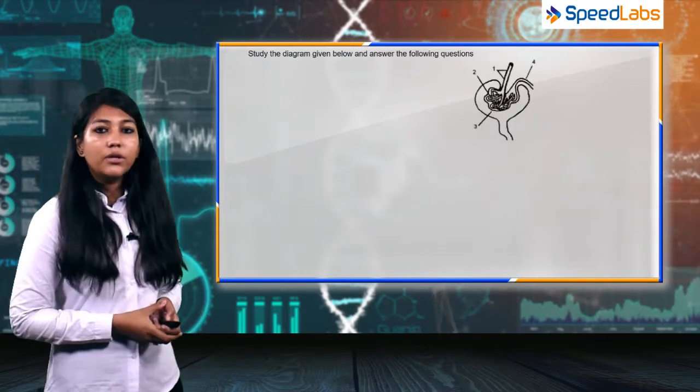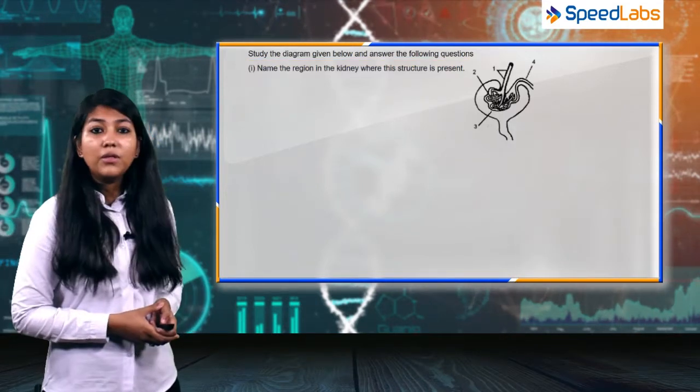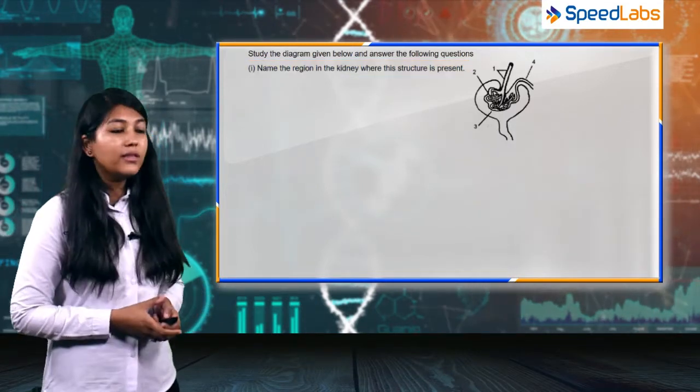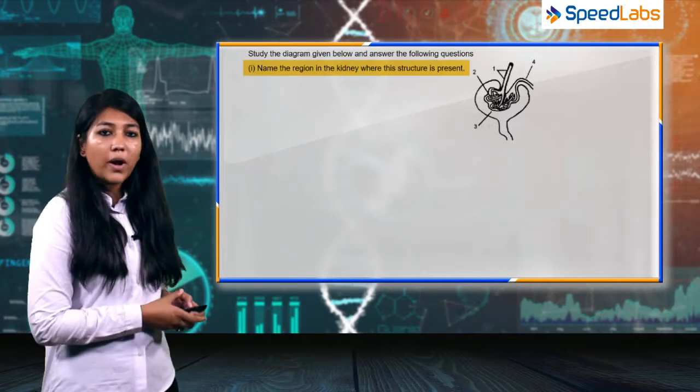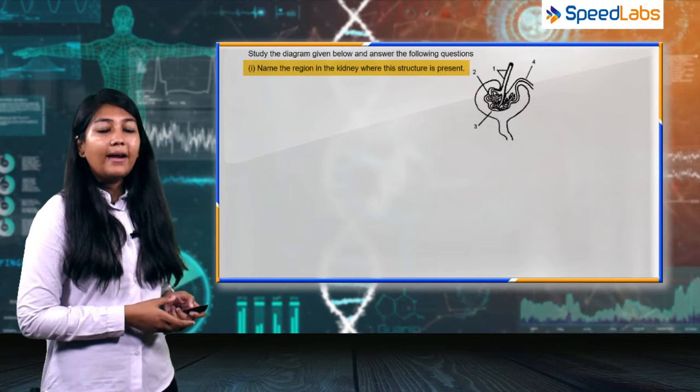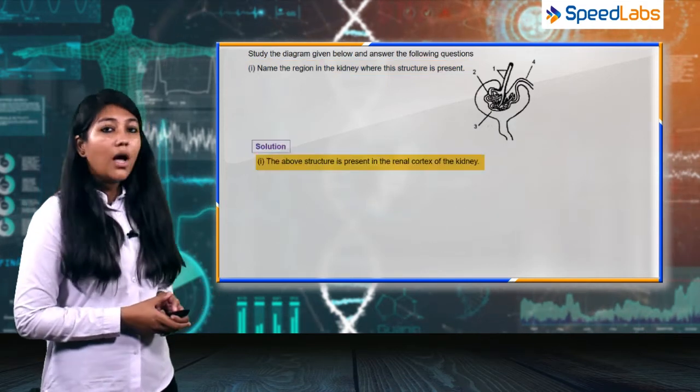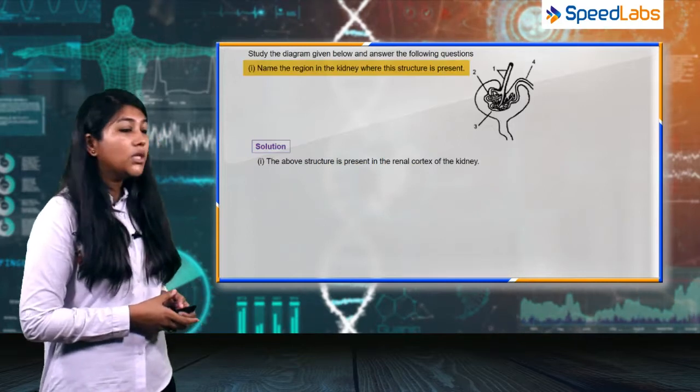Here is the diagram. The first part of the question is: name the region in the kidney where this structure is present. The structure we can see here is the Bowman's capsule, and it is present in the renal cortex of the kidney.